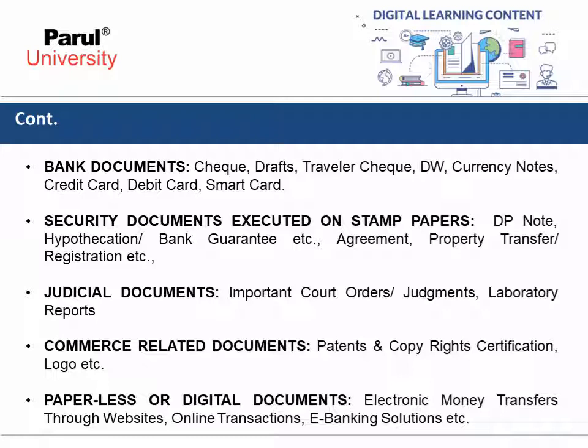The next classification is security documents executed on stamp paper. A security document is defined as a document which is more secured by means of introducing different types of security features at different levels. These may include demand promissory (DP) notes, hypothecation or bank guarantees, agreements, property transfers, and property registrations.